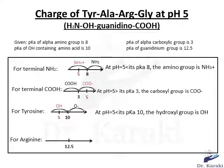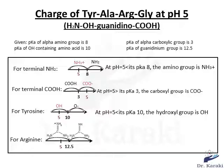For arginine, we have the guanidino function. We put the pKa of the guanidino on the axis, which is 12.5. On the left side we have the protonated form, which is the guanidinium, and on the right side the unprotonated form. Since 5 is lower than 12.5, at this pH we have the positively charged guanidinium.